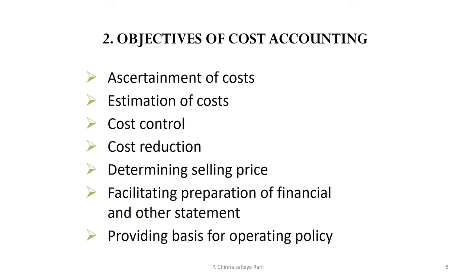The objectives of cost accounting: first is ascertaining costs — basically determining costs. When producing a product or service, you incur various types of costs, whether raw materials, machinery, or labor. We need to determine which these costs are and to what extent each contributes to the final cost of a product or service.